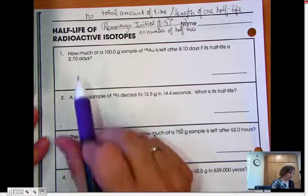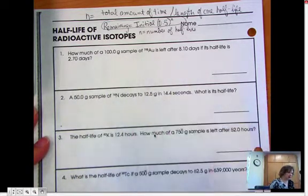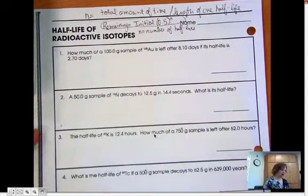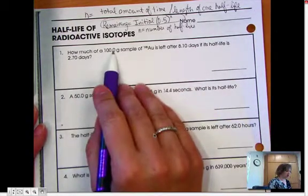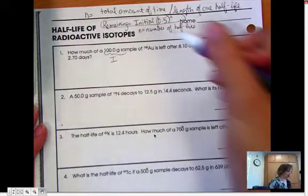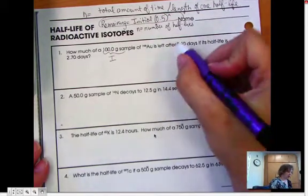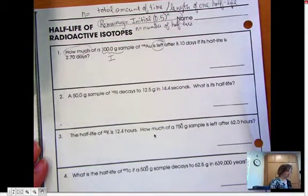So let's look at the first problem. How much of a 100-gram sample of gold 198 is left after 8.10 days? If its half-life is 2.70 days. A 100-gram sample is our initial amount. So I'll put that I by that. We're looking for how much is left, right? So we're looking for remaining. So remaining, we don't know.